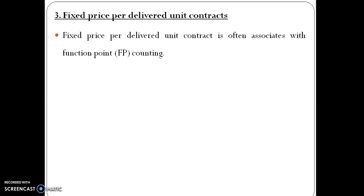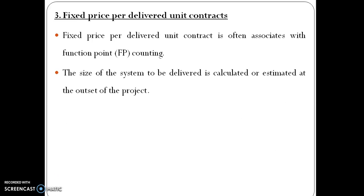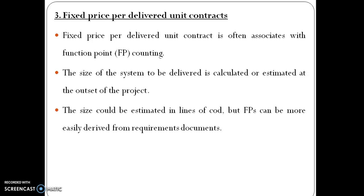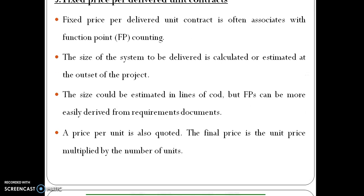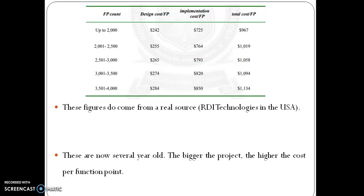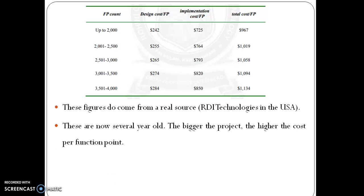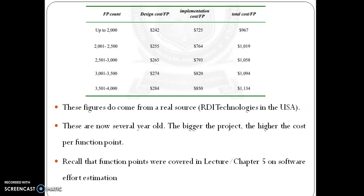Fixed price per delivered unit contracts are often associated with function point counting. The size of the system to be delivered is calculated or estimated at the outset of the project. Size could be estimated in lines of code, but function points can be more easily derived from requirements documents. The price per unit is also quoted — the final price is the unit price multiplied by the number of units. For larger projects, the cost per function point is higher.